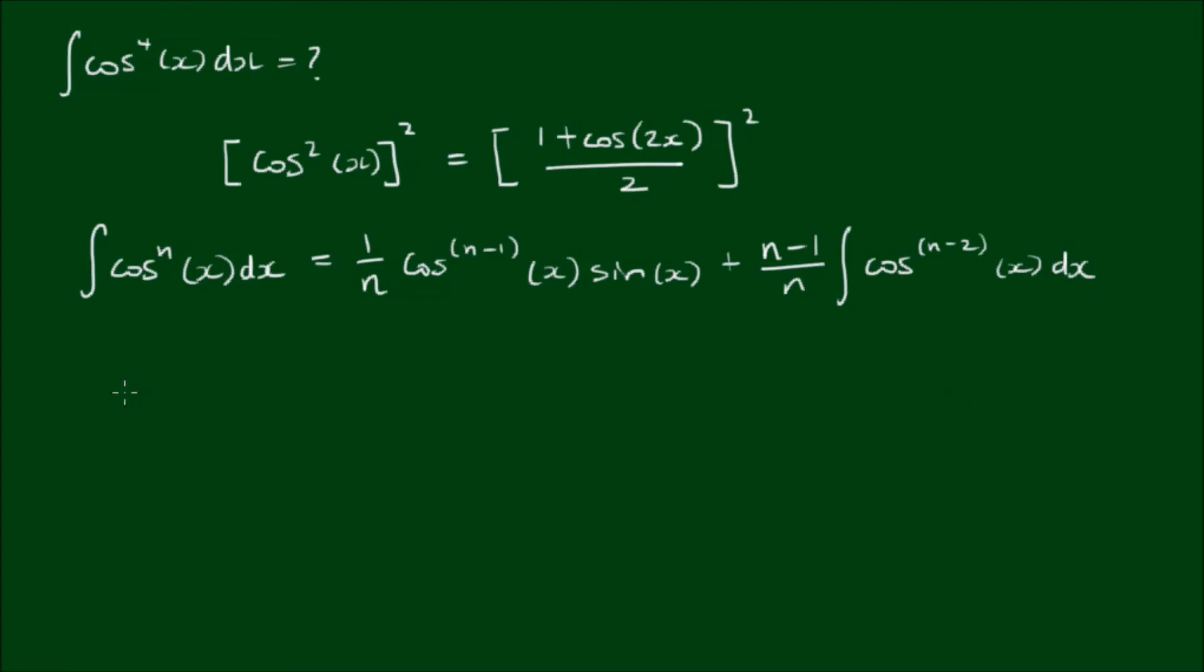So to make things simple, we just need to substitute n for 4. So the integral of cosine to the fourth power of x with respect to x is equal to 1 on 4 by cosine cubed of x by sine of x, plus 4 minus 1 on 4 by the integral of cosine squared of x with respect to x. The only term we need to simplify is here, where 4 minus 1 is equal to 3.